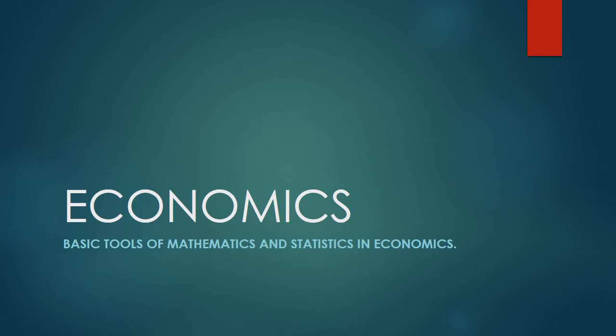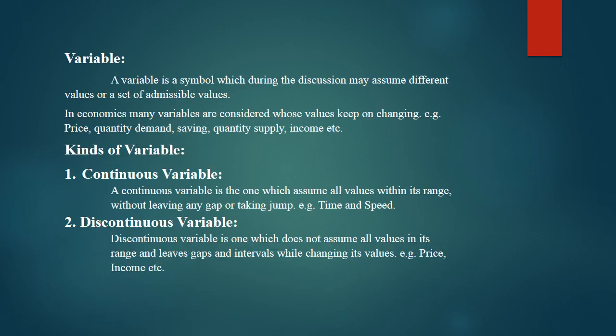Assalamu alaikum students. I am going to start your new chapter: basic tools of mathematics and statistics in economics. This is chapter number eight of your book. The first topic is a variable. Generally, the quantities which change their values are known as variables. A variable is a symbol which, during the discussion, may assume different values or a set of admissible values. In economics there are many terms which are changing in value, such as price.